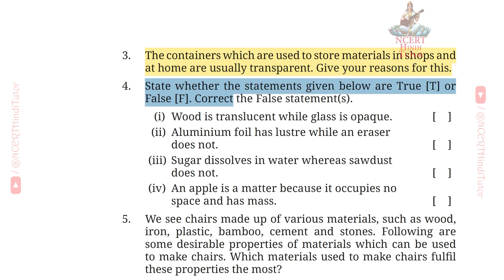Q4: State whether the statements given below are True (T) or False (F). Correct the false statements. Statement 1: Wood is translucent while glass is opaque. This is False. Correct statement: Wood is opaque while glass is transparent. Statement 2: Aluminum foil has luster while an eraser does not. This is True.